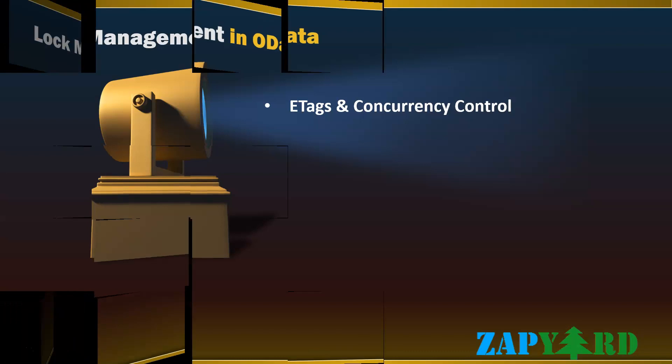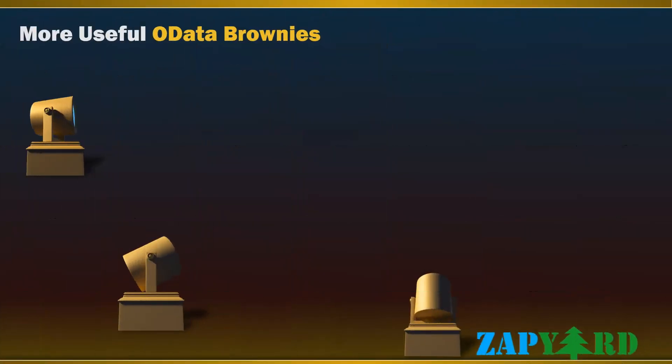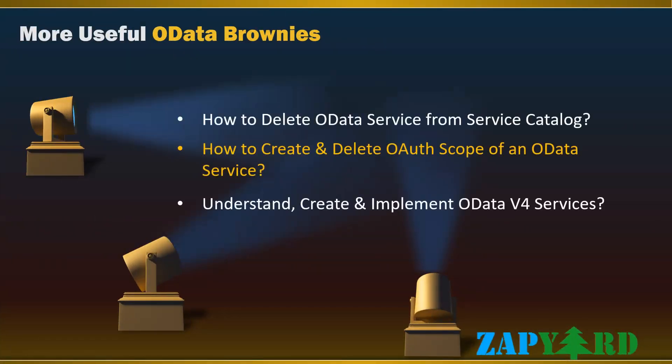Finally, before we end the course, we will understand OData v4 services and also create and implement OData v4 services. Additionally, the trainer will teach how to delete OData services from the service catalog and cover how to create and delete OAuth scope of an OData service.